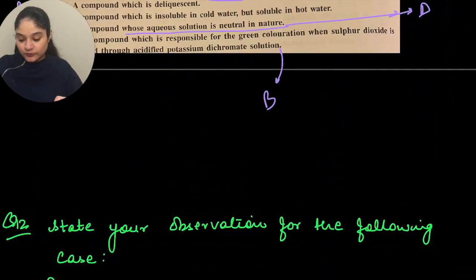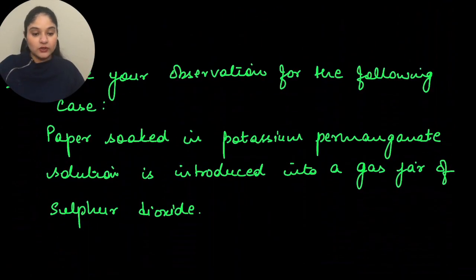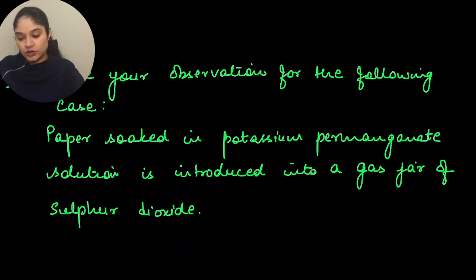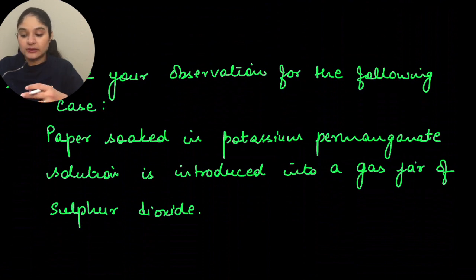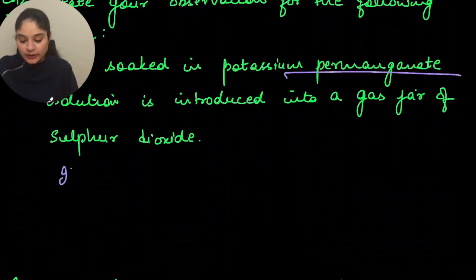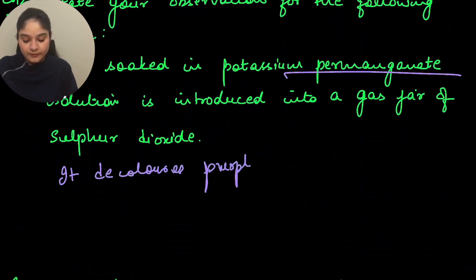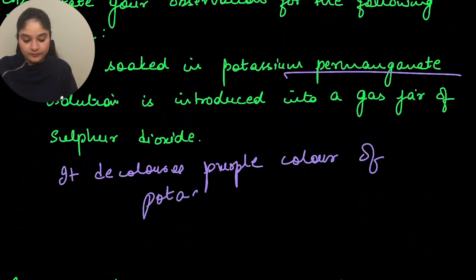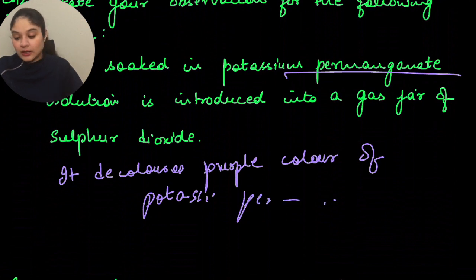Question 12: state what you would observe when paper soaked in potassium permanganate solution is introduced into a gas jar of sulfur dioxide. In this case, the sulfur dioxide decolorizes the purple color of potassium permanganate.